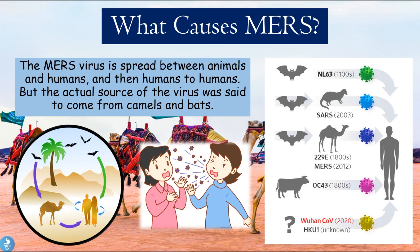What causes MERS? The MERS virus is spread between animals and humans, and then humans to humans. The actual source of the virus was said to come from camels and bats. As we can see here, bats affect the camels, camels affect the humans, and humans are able to give it to one another — this was the 2012 outbreak which affected many people from Saudi Arabia and then Korea as well.